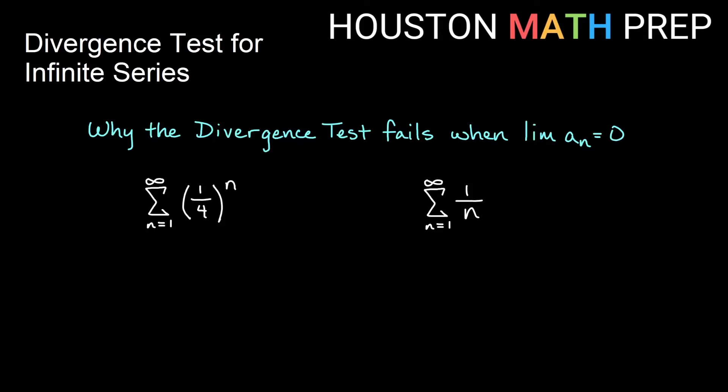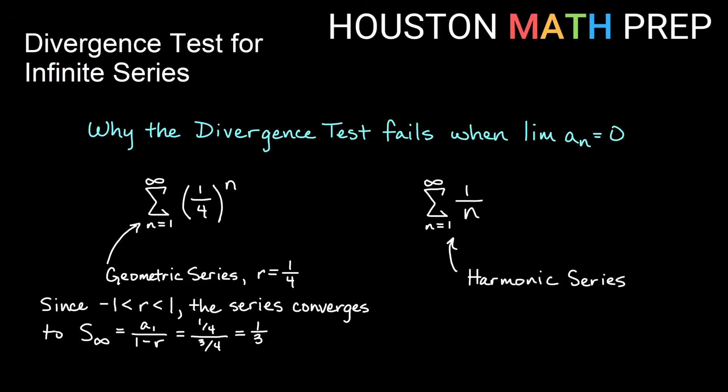If you're still wondering why the divergence test will not tell us if something converges, we want to explain why the divergence test fails when the limit is 0. So I have it here. This is a geometric series and the ratio is 1 fourth. When you have a geometric series and the ratio is between negative 1 and 1, remember the series converges and we actually know a formula that it converges to. This sum of 1 over n on the right is the harmonic series and we know from our previous video that the harmonic series diverges.